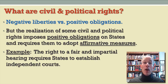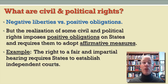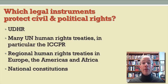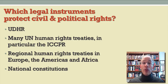I'll preview a little bit what we'll talk about with respect to economic, social, and cultural rights — those rights are predominantly positive obligations, but they do have negative liberties implications. So civil and political rights are mainly negative liberties, but with some affirmative obligations. The legal instruments that protect civil and political rights include the Universal Declaration on Human Rights, numerous UN human rights treaties, regional human rights treaties, and national constitutions — a set of rights that are very widely respected both nationally and internationally.